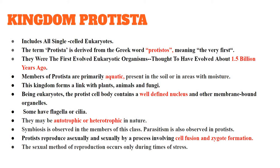Protista members are mostly aquatic and are present in soil or in areas with moisture. This kingdom forms a link between plants, animals, and fungi. Some members have similarity to plants, some have more similarity towards animals, and some show similarity towards fungi. So this kingdom is considered a connecting link between kingdom Plantae, kingdom Animalia, and kingdom Fungi.